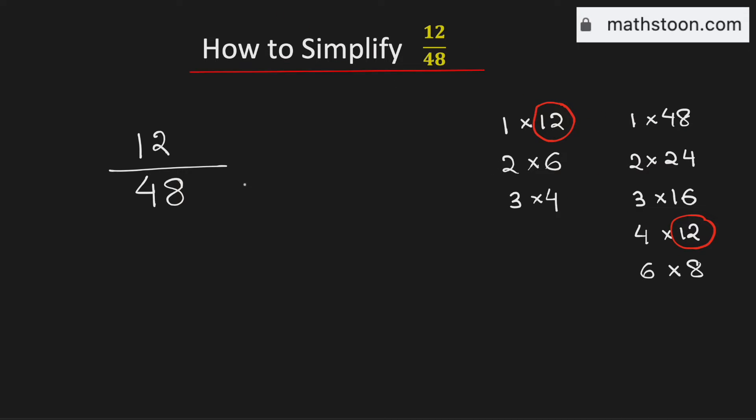So to simplify it, we need to divide both the numerator and the denominator by 12. And by doing so, we will get 1 in the numerator and 4 in the denominator.